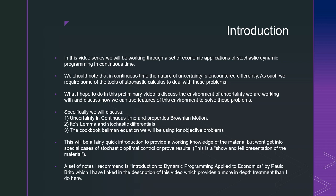What I hope to do in this preliminary video is discuss the environment of uncertainty that we'll be working with and discuss how we can use these features of this environment to solve problems that we have here. Specifically, we'll discuss uncertainty in continuous time and properties of Brownian motion. Then we're going to briefly state Ito's lemma and stochastic differentials and what they look like. Then we're going to demonstrate the cookbook Bellman equation for what we're going to be using for objective problems in this environment.